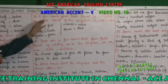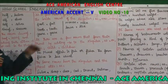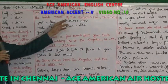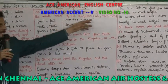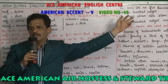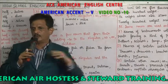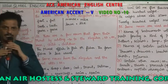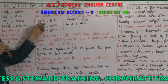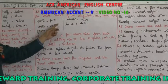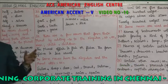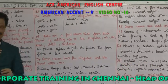A few nouns form their plural by changing the inside vowel of the singular: man becomes men, foot becomes feet, tooth becomes teeth, goose becomes geese, mouse becomes mice, louse becomes lice. So all the inside vowels are changing.